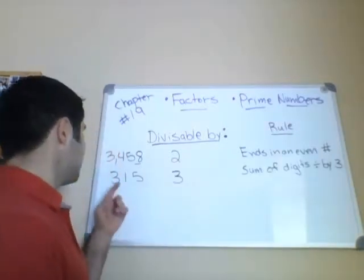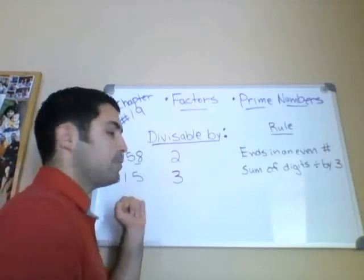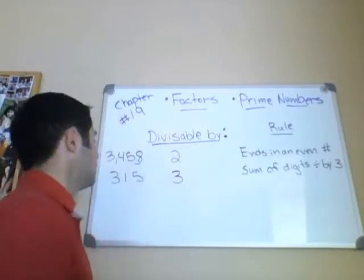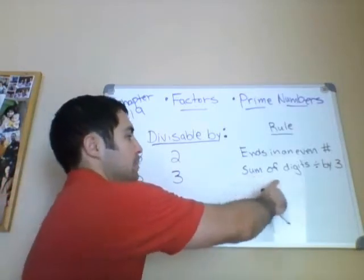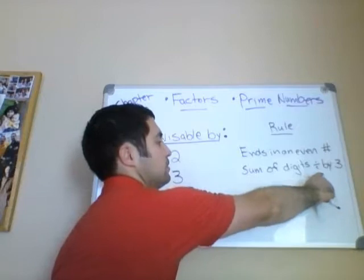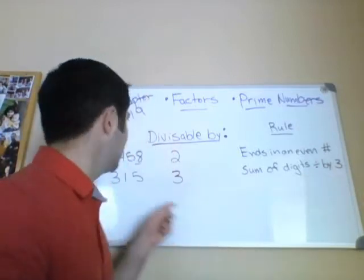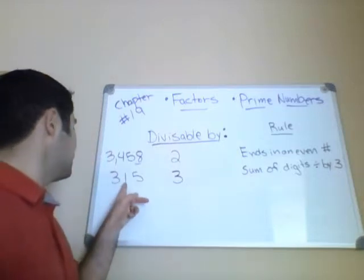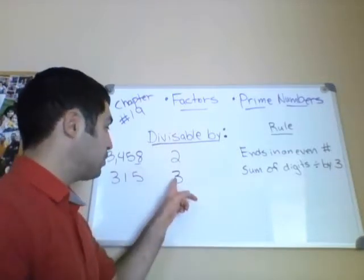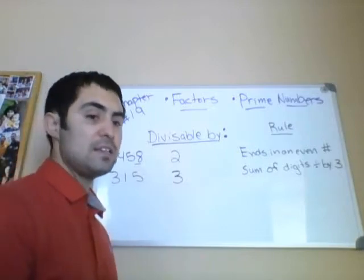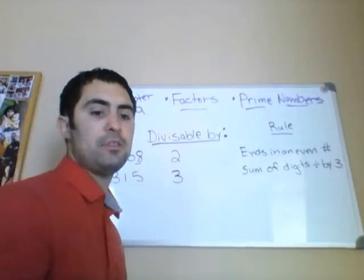Let's determine if a number is divisible by 3. Take 315. The rule is: the sum of the digits is divisible by 3. Sum means add, so 3 plus 1 is 4, plus 5 is 9. Is 9 divisible by 3? The answer is yes. Therefore, 315 is also divisible by 3.